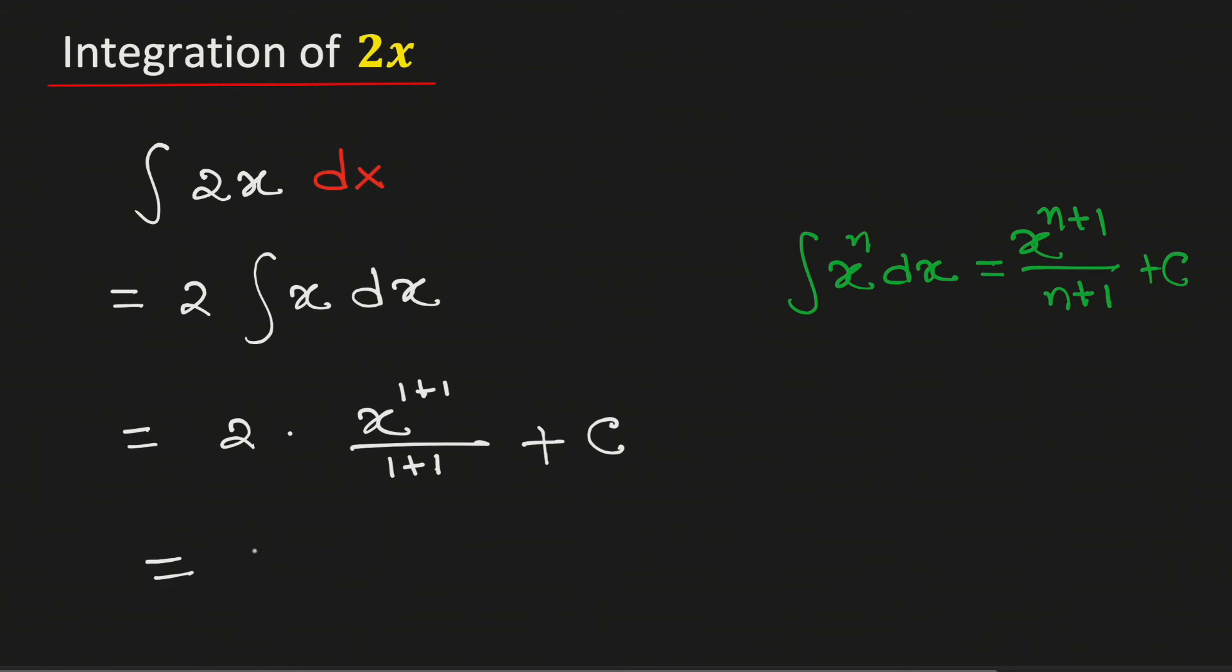Now simplifying, it will be equal to 2 times x square over 2 plus integration constant c. Again simplifying, we will get x square plus c. So the integral of 2x is equal to x square plus integration constant c. And this is our final answer.